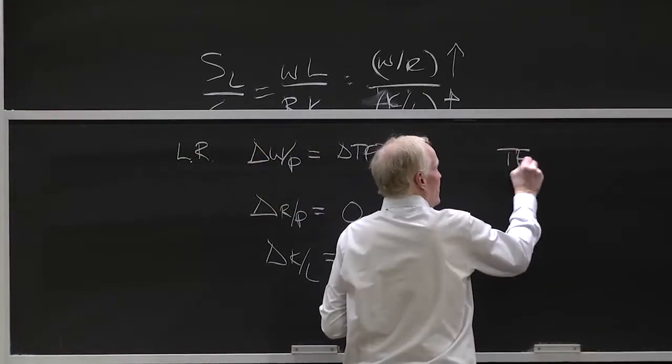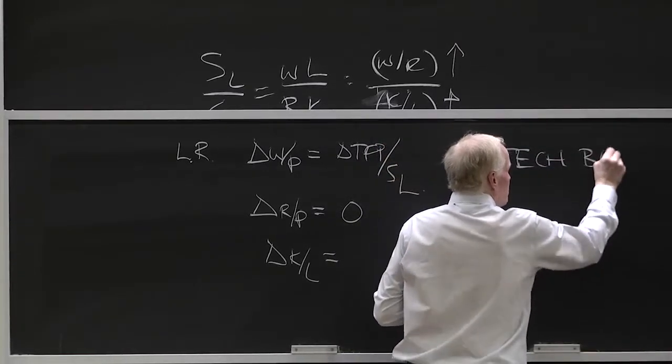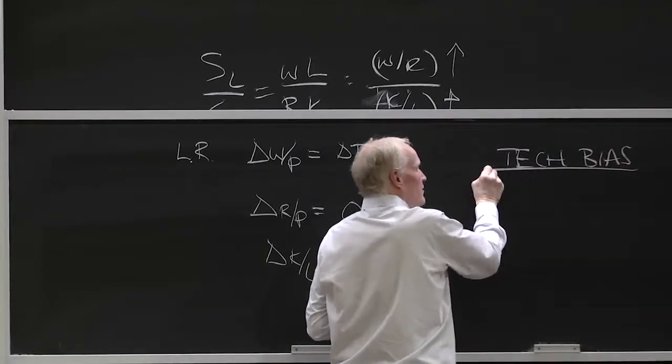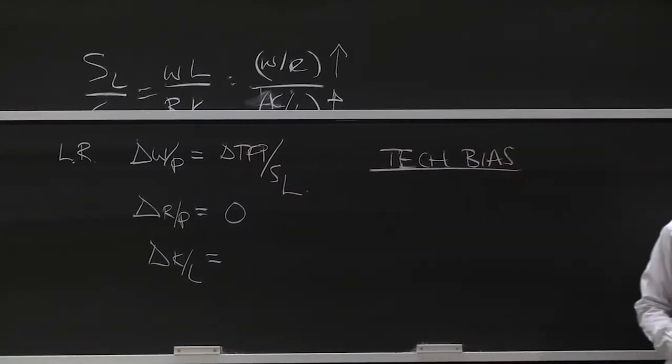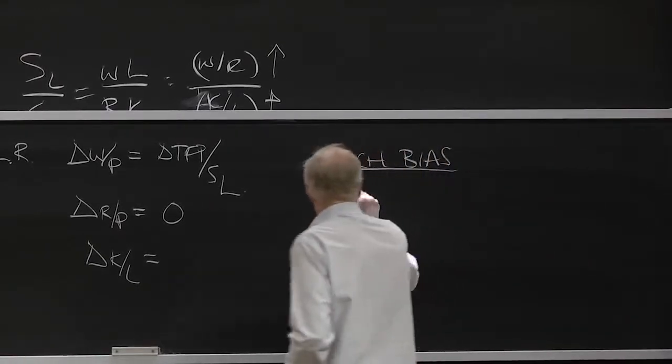We need something we haven't done and talked about yet. We've talked about the rate of productivity growth, but we've left out an important dimension, which is what we call technical bias. What do we mean by technical bias? What do we mean by bias in technology growth?